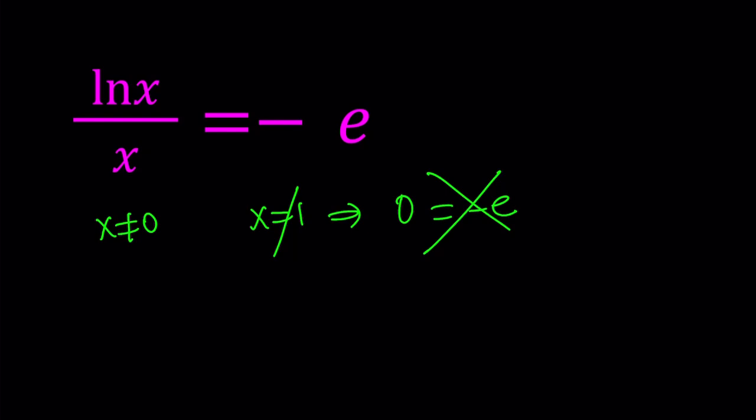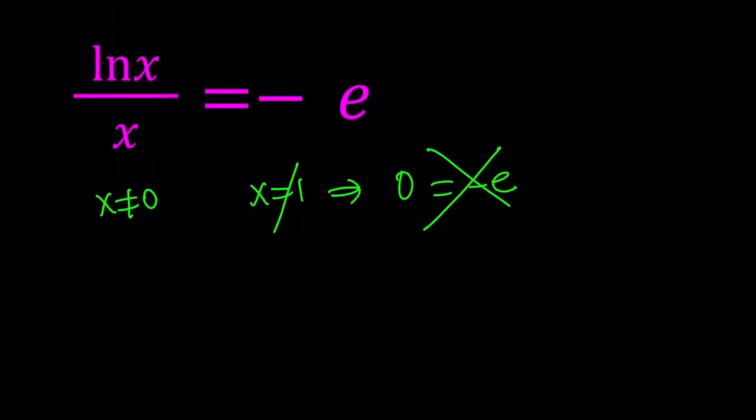So first of all, notice that ln x over x is equal to negative e. E is Euler's number, which is about 2.7. And negative e is going to be negative 2.7. So it's a negative number for sure. It's a constant and it's negative. So ln x over x is negative.